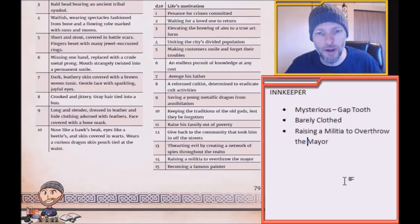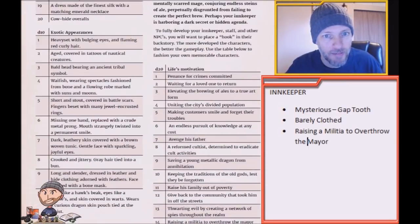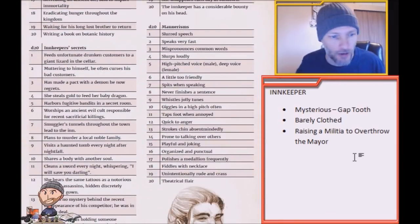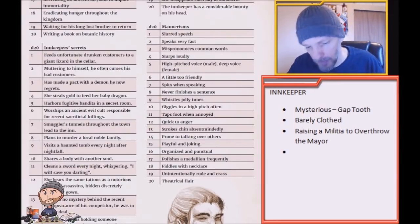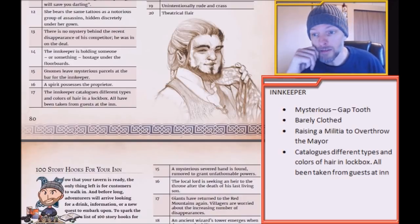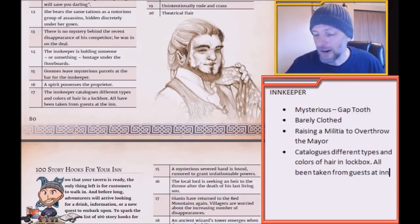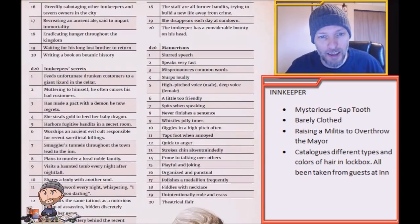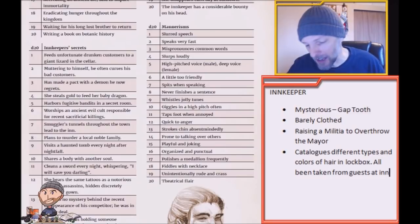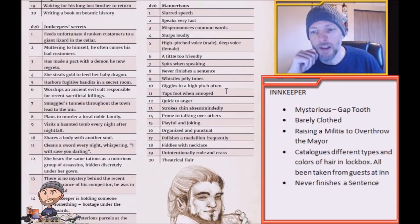I rolled a 14 for life's motivation — raising a militia to overthrow the mayor. Definitely a shady place, this Horned River! Now we're going to give our innkeeper a secret — also a d20 roll — and I got 17: catalogs different types and colors of hair in a lockbox, all of this hair taken from guests at the inn. Wow. Now let's add one more personality trait — a mannerism — with another d20 roll. I got 8: never finishes a sentence. Very interesting innkeeper we have here!